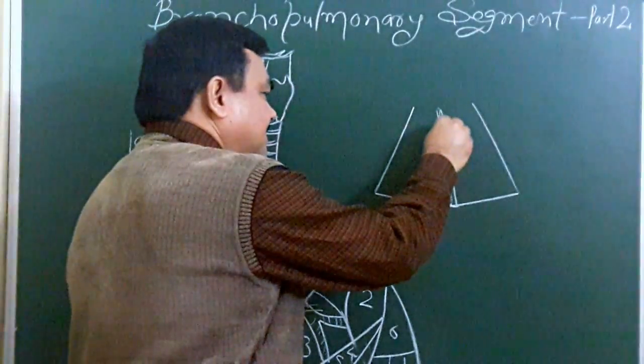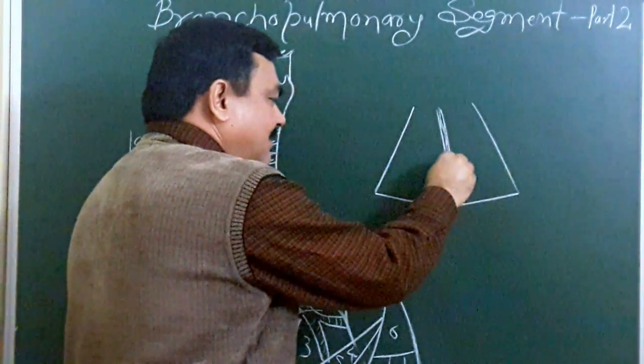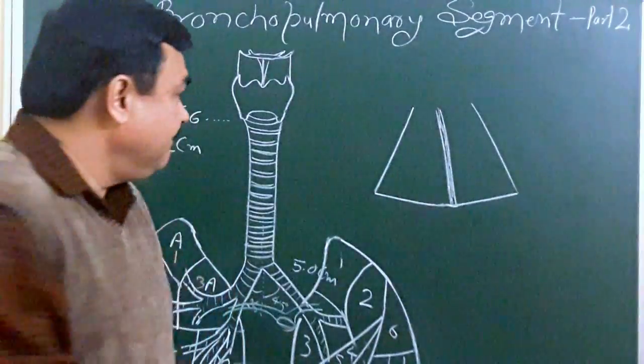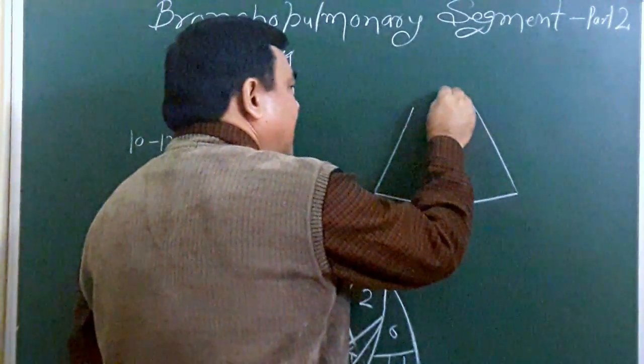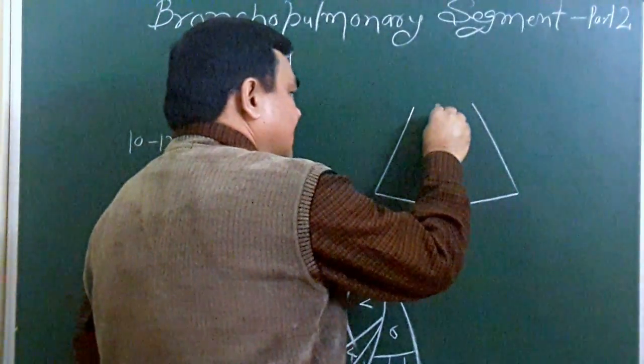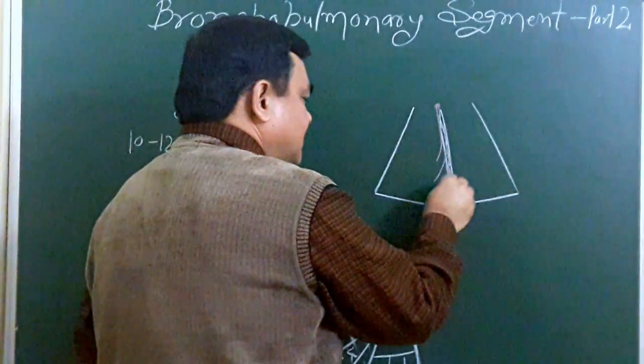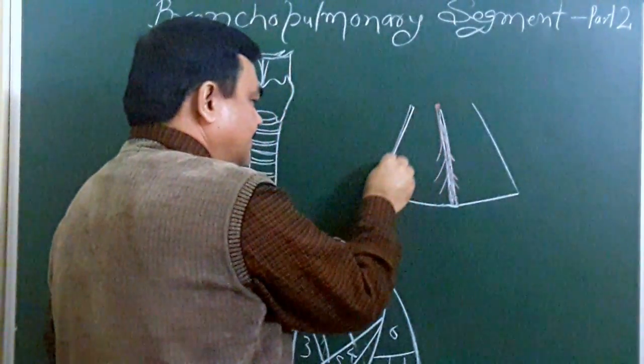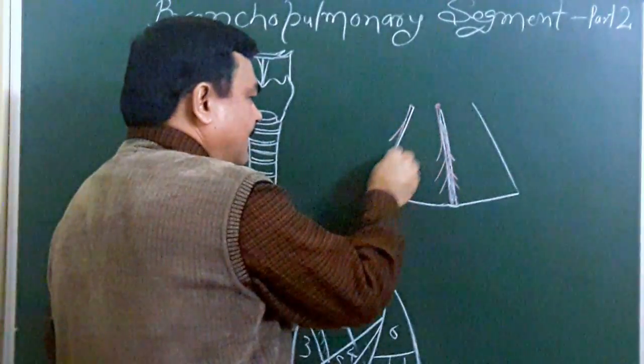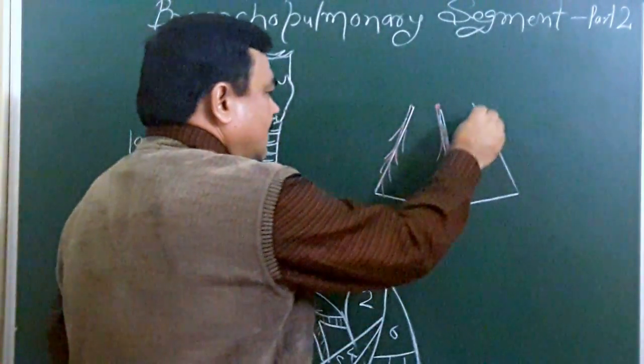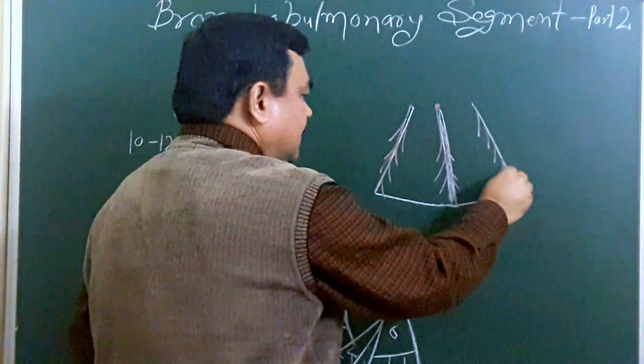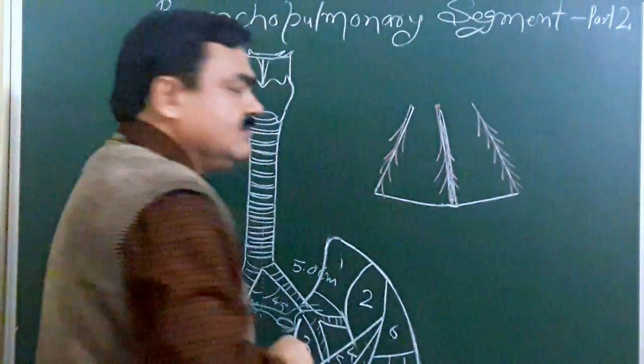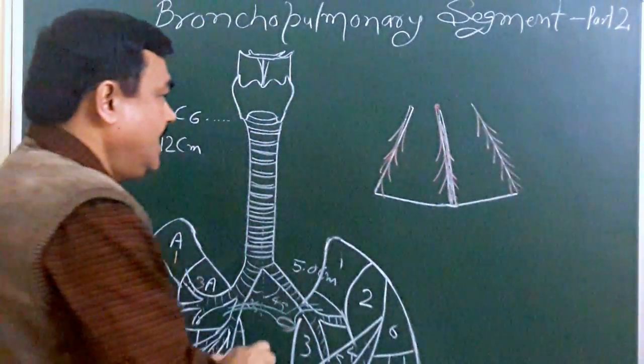An intersegmental plane made up of connective tissue. Here, the pulmonary vein passes through this intersegmental plane.